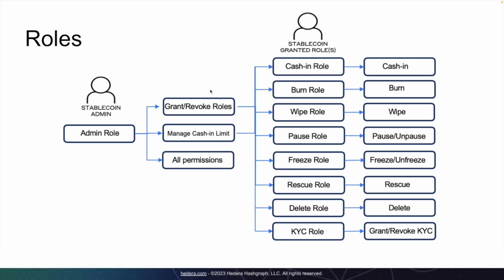There are 8 different roles, excluding the admin, that you can grant or revoke. Let's talk about the first role: the cash-in role. The cash-in role allows the user to create more tokens. The admin can also set a cash-in limit so that the user won't be able to mint or create tokens beyond that limit.